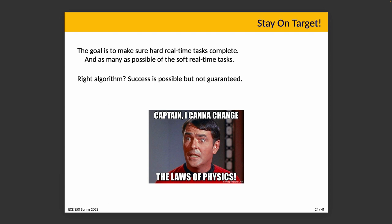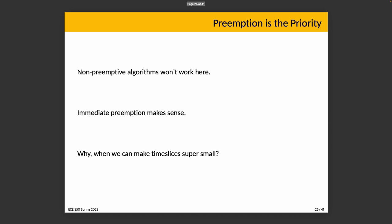None of the non-preemptive scheduling algorithms work for real-time systems. If a hard real-time task arrives while an unimportant task is in progress, it's not sensible for the high-priority task to wait until the current one voluntarily yields the CPU. Similarly, scheduling based solely on time slices doesn't work — forcing a higher-priority task to wait up to one full time slice is not optimal. The sensible approach is immediate preemption: when something higher-priority comes in, we drop what we're doing and deal with it.